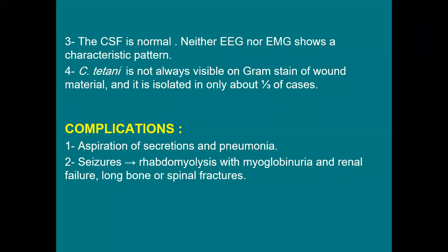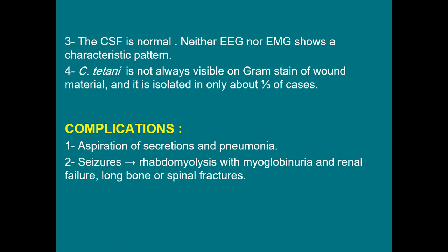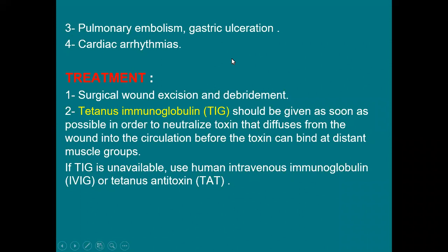Complications of tetanus all occur due to continuous muscle spasm. Spasm of facial, bulbar, laryngeal, and pharyngeal muscles causes difficulty swallowing saliva, accumulation of secretions, aspiration, and aspiration pneumonia. Continuous seizures can lead to rhabdomyolysis with myoglobinuria, which causes renal failure. Sustained muscle contracture can cause fractures of long bones or spinal fracture. Pulmonary embolism, gastric ulceration, and cardiac arrhythmia may also occur.